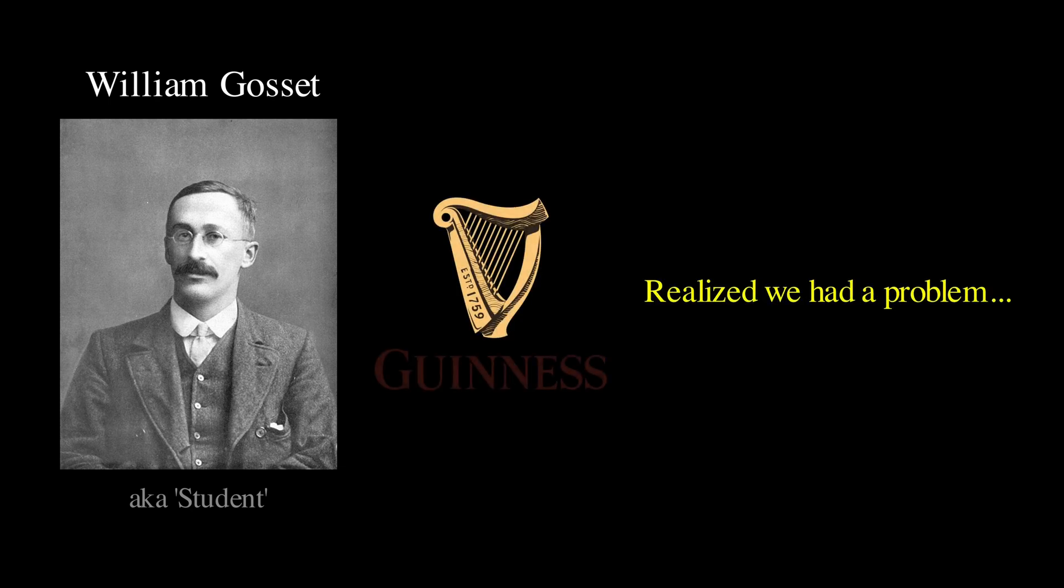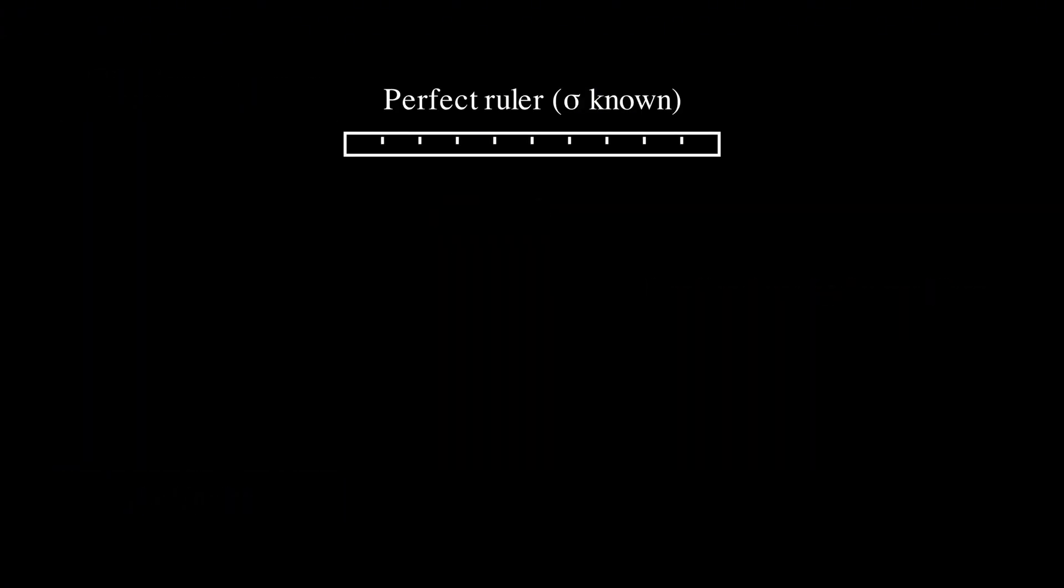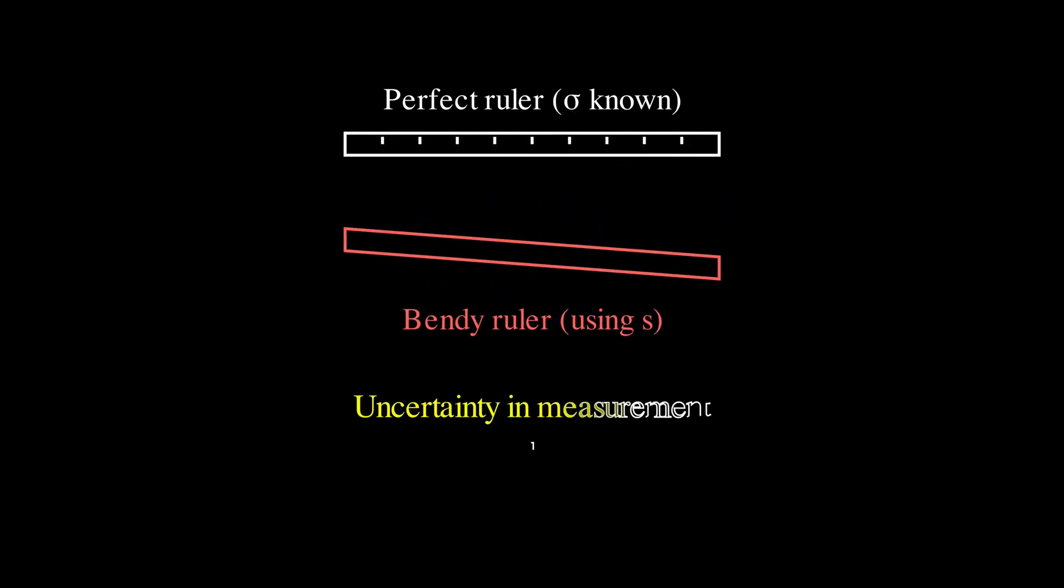You see, when we use the sample standard deviation, instead of the true population standard deviation, we are adding another layer of uncertainty to our calculations. It's kind of like trying to measure something with a ruler that's slightly bendy. Not only are you uncertain about the measurement itself, but you are also uncertain about how accurate your measuring tool is.